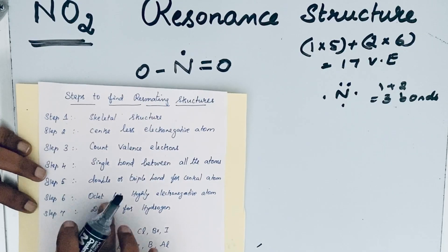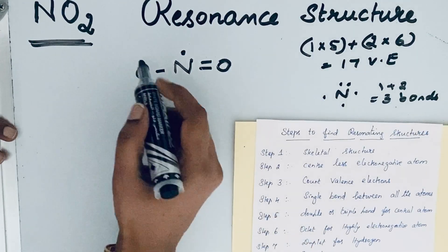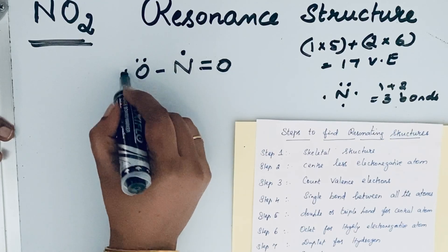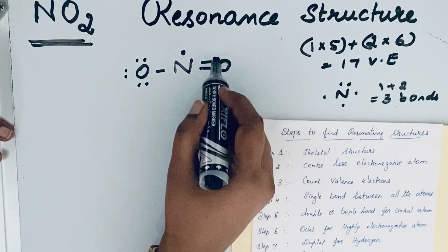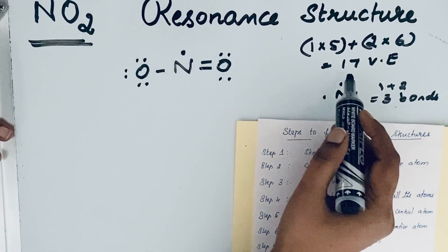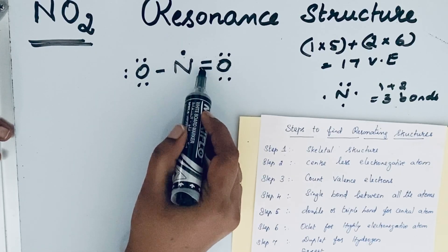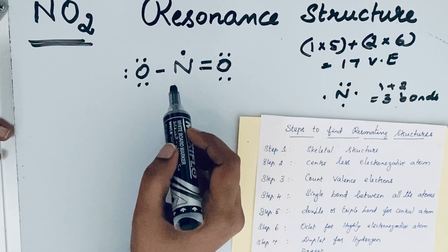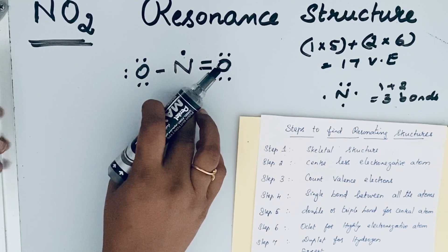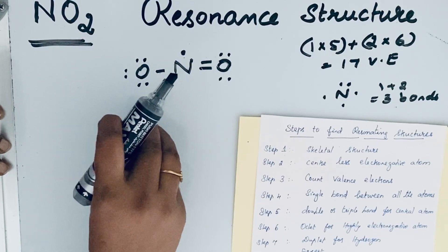Step 6: give the octet configuration to the highly electronegative atom. Here, oxygen is highly electronegative, so let us complete its octet. Each single bond contributes 2 electrons: 2, 4, 6, 8. Counting all electrons in the structure: 2, 4, 6, 8, 9, 11, 13, 15, 17 — confirming 17 valence electrons. This is our first Lewis structure, from which we will write the resonating structure.